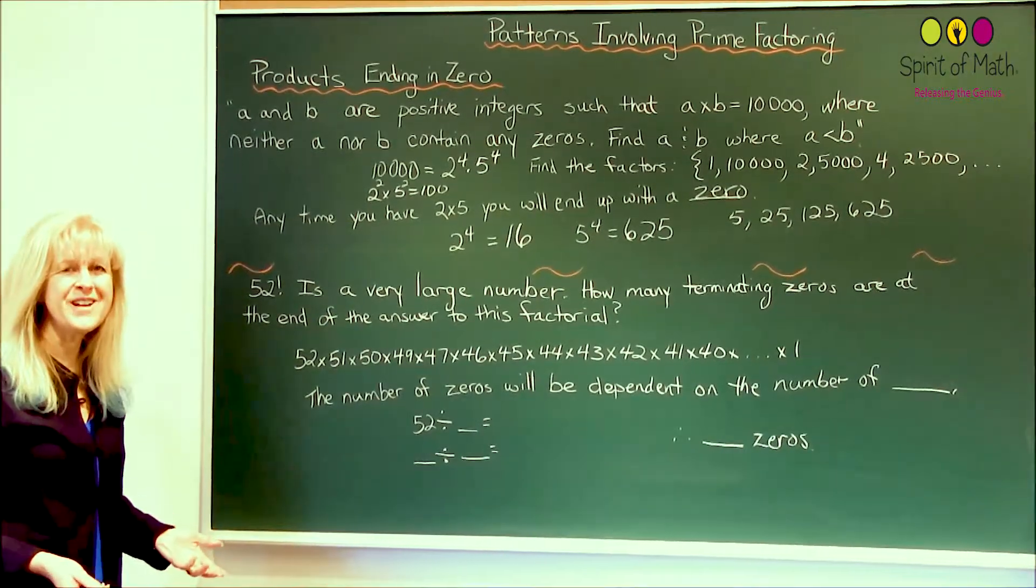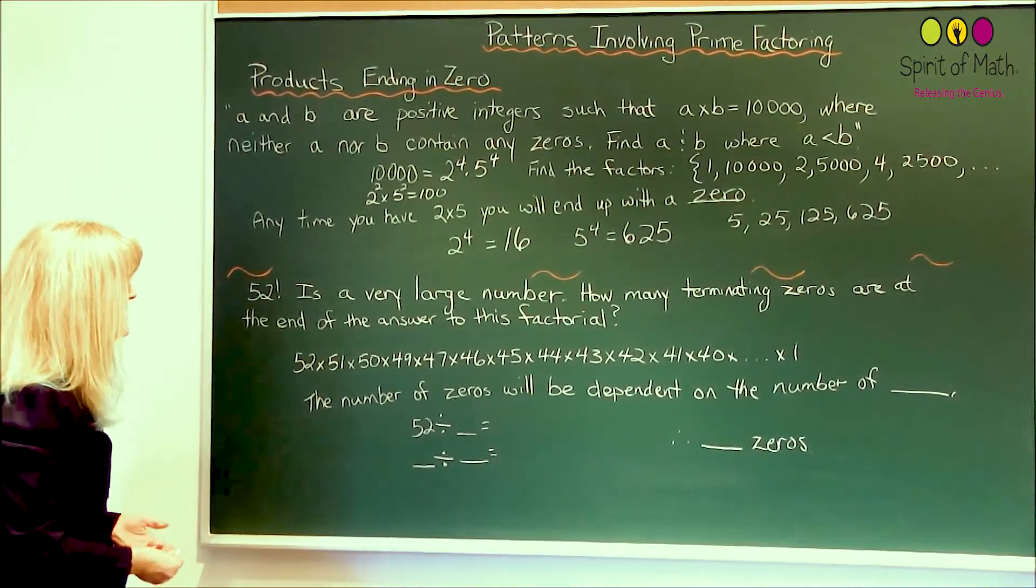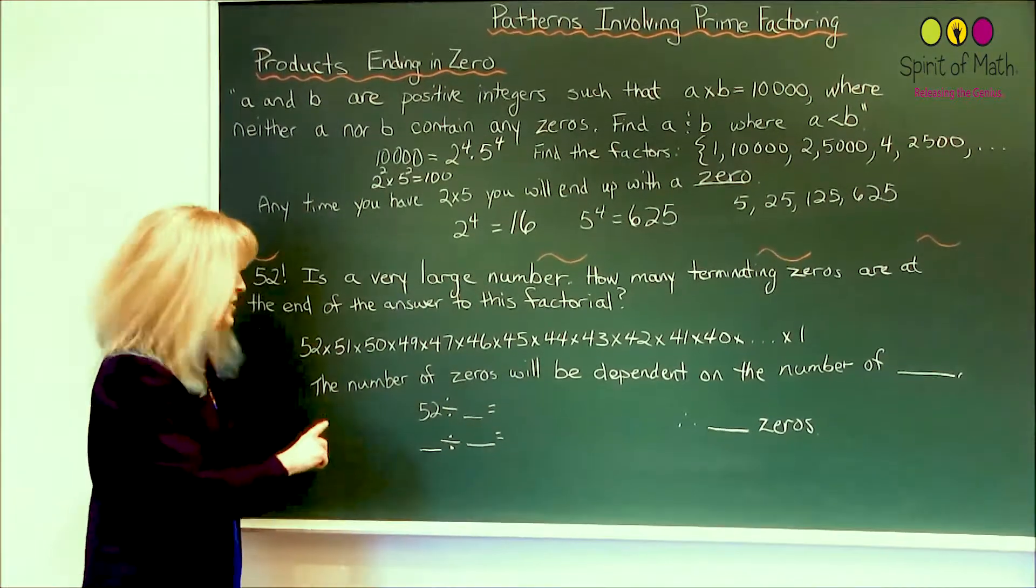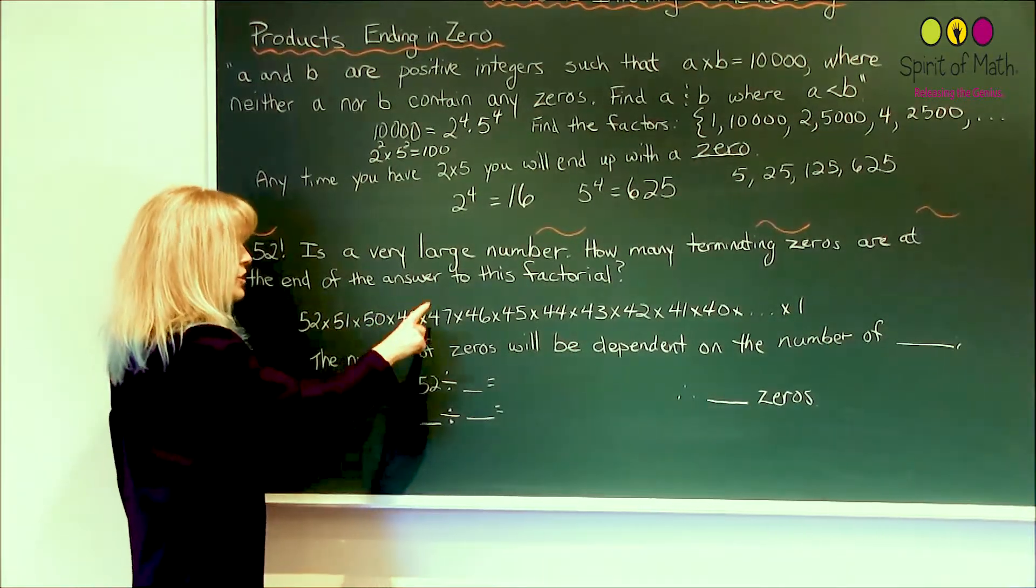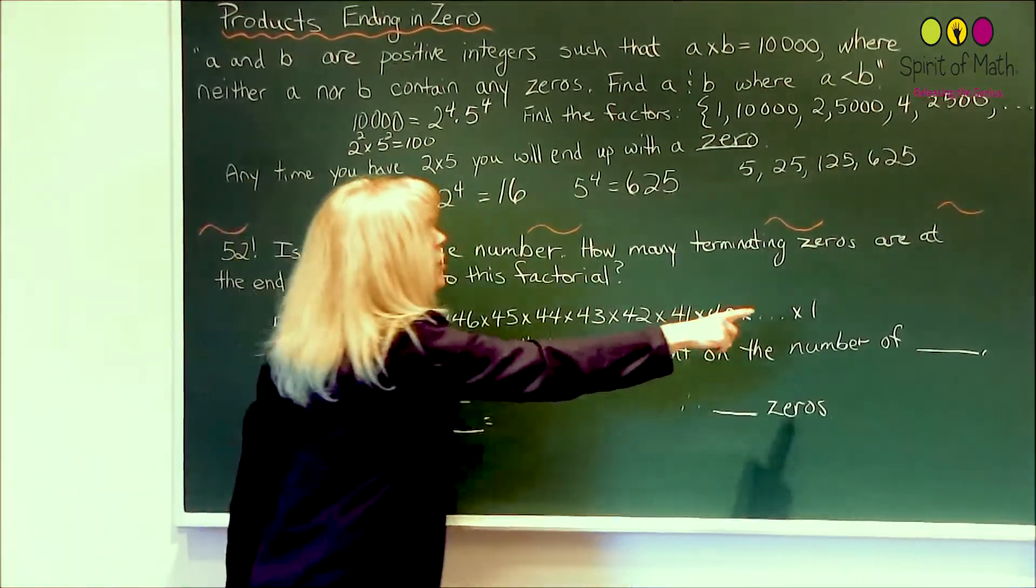So you still have terminating zeros. In this case, I've written, I started writing it out. I didn't write the whole thing out, but it's basically saying you've got 52 times 51 times 50 times 49 times 47, and so on, all the way down to 1.